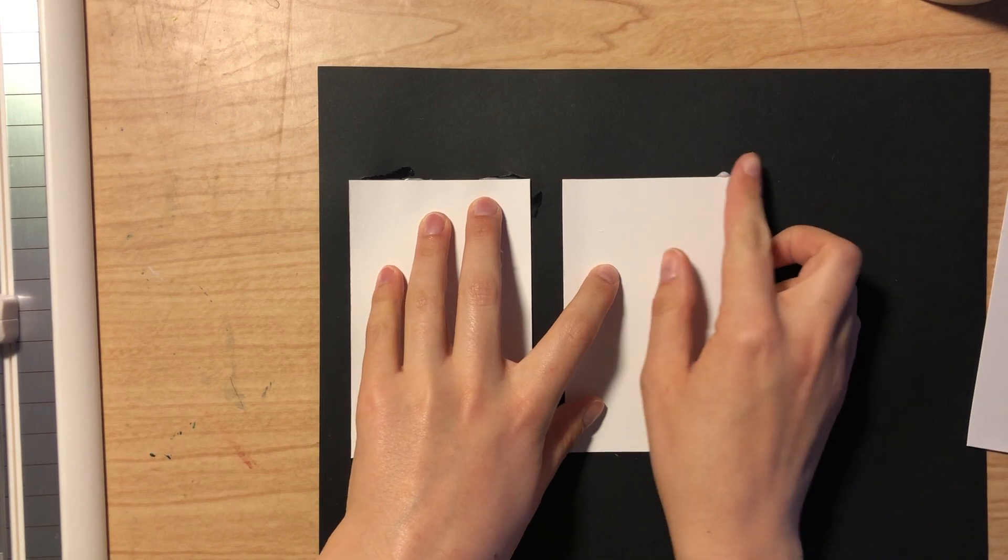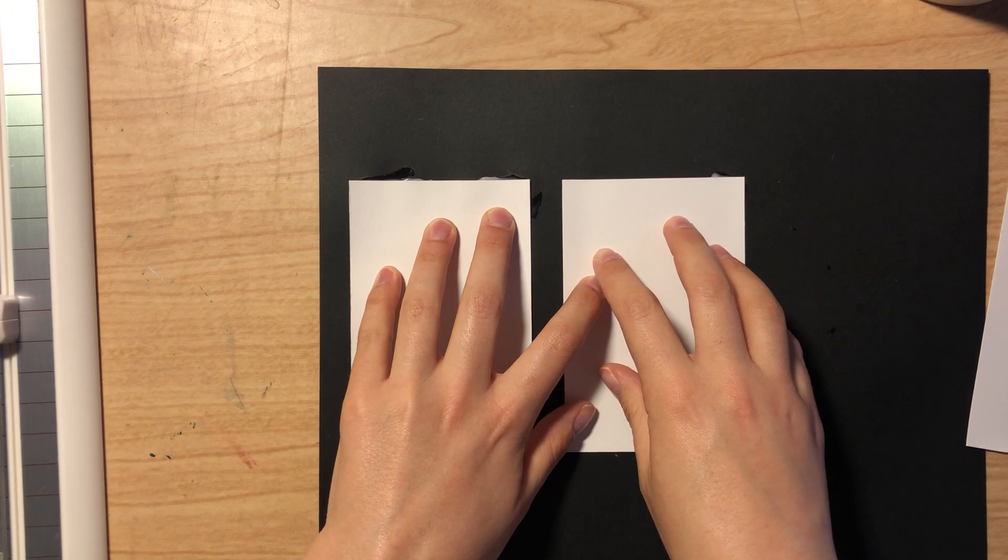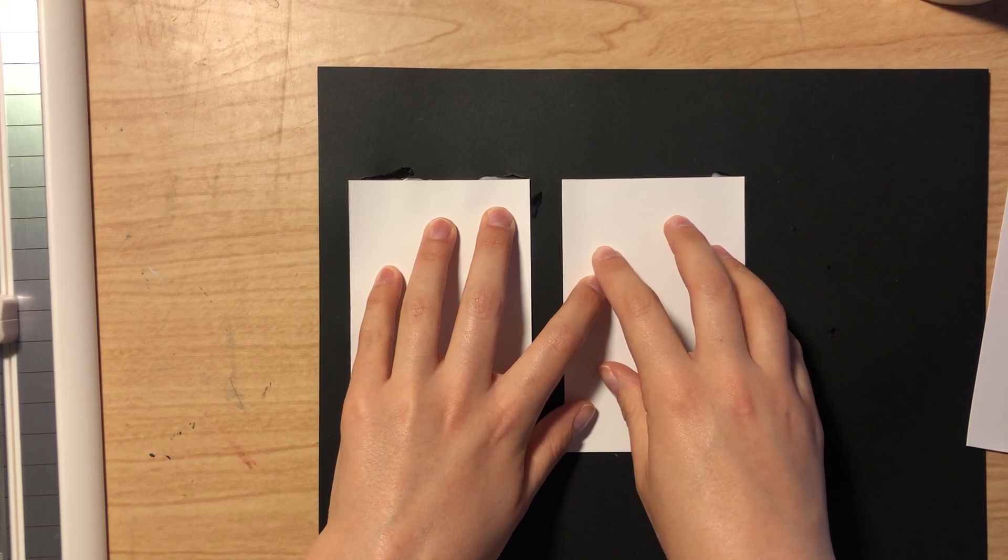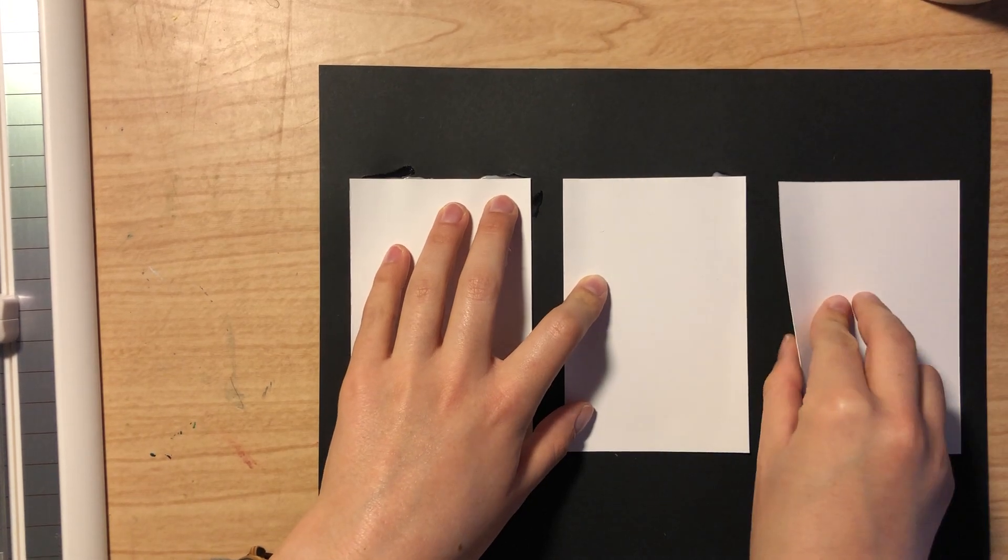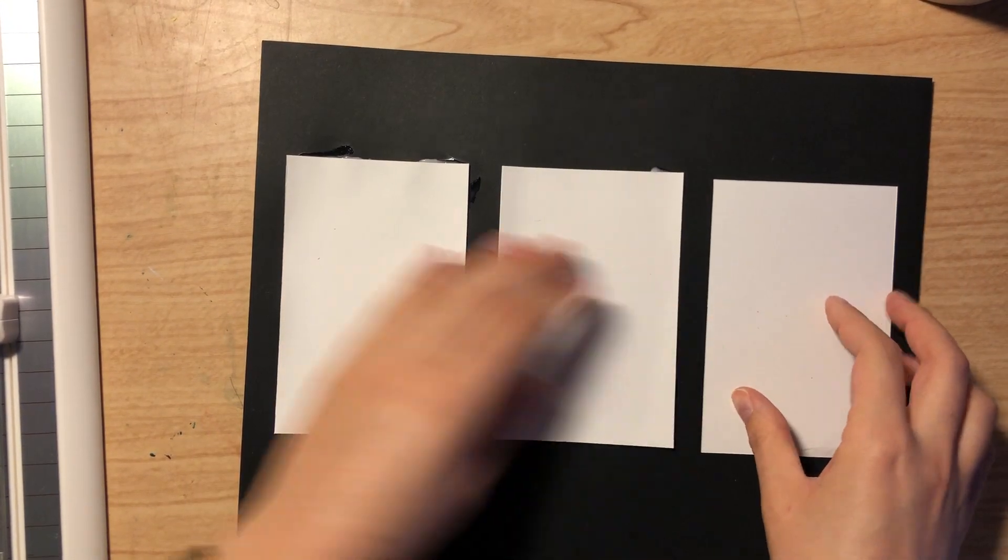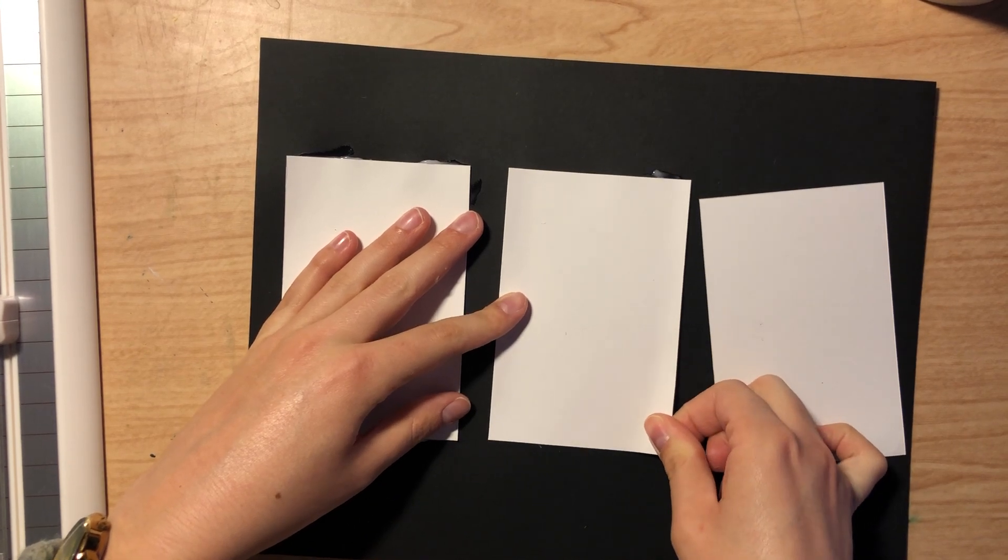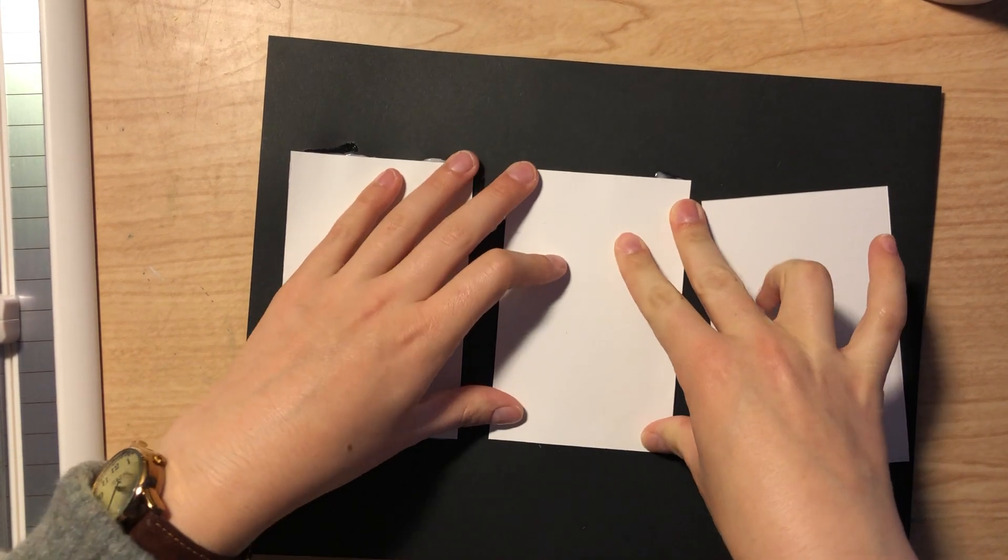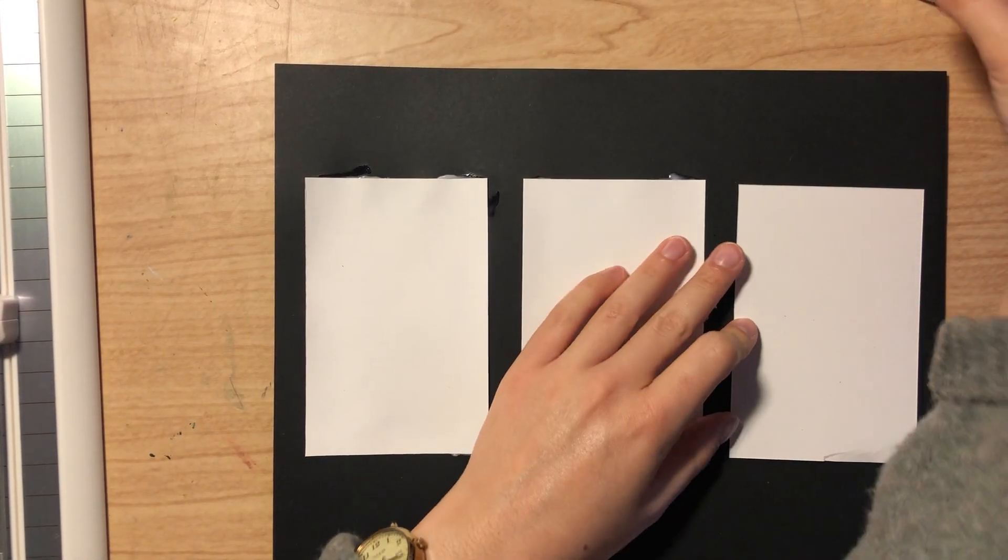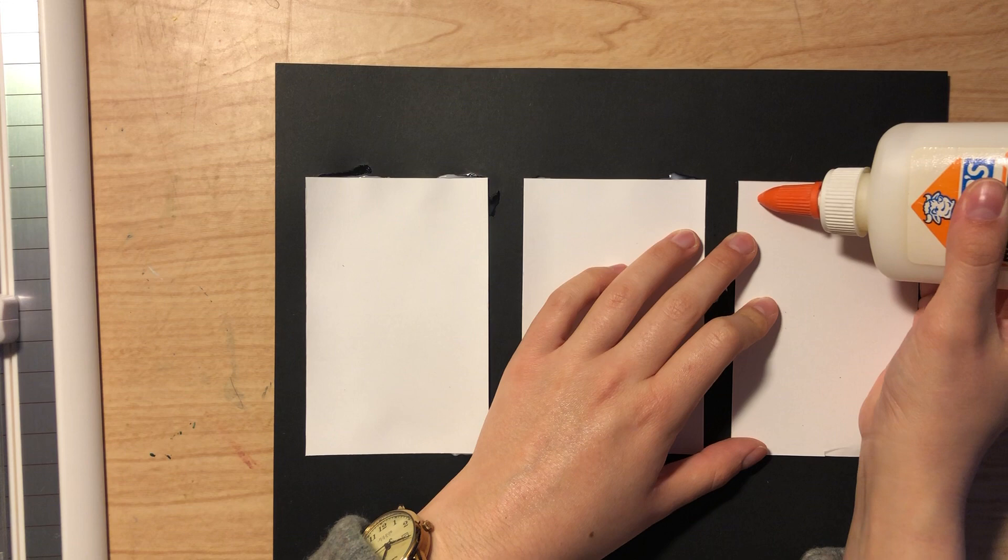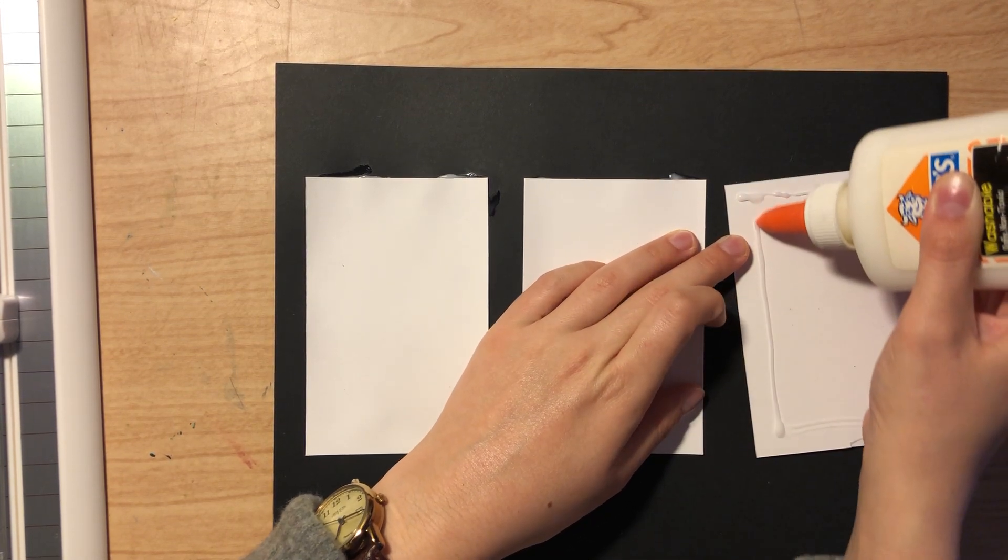So this space between these two is about the same space as the first one is from the outside, just to make it look all uniform and pretty. And again, the last one, I'm going to flip my artwork over, adjust this just a little bit. You can adjust things while they're still drying, that's a nice thing about this glue. And I'm going to do the same thing for the last one.